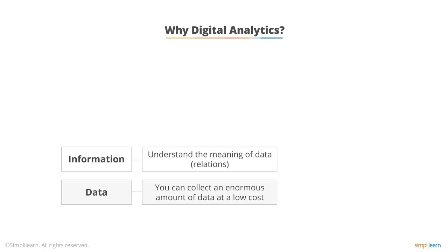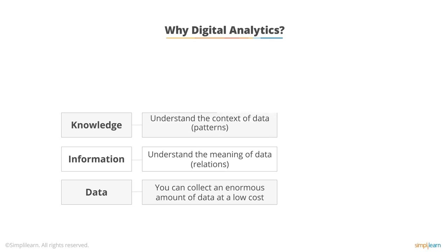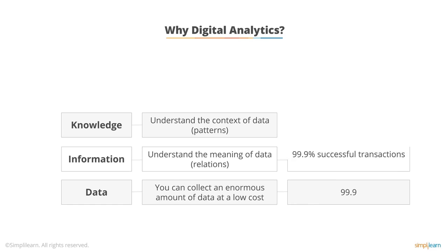Information is being able to understand the meaning of the data. But once we have information, what do we do with it? We want to transform it into knowledge. Knowledge is understanding the context of the data and the information we have. For example, if I have a piece of data that says 99.9 — that's a piece of data. But what does it mean? Information might be that 99.9 is the percentage of successful transactions, meaning a small number of transactions don't go through my systems.